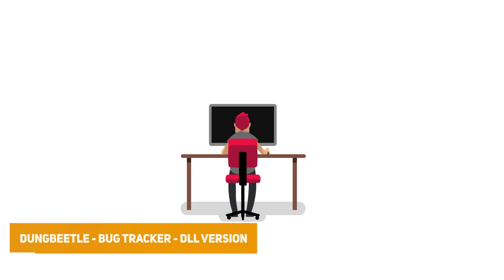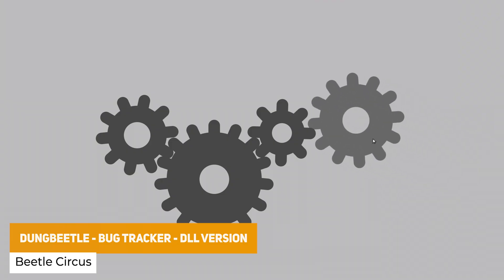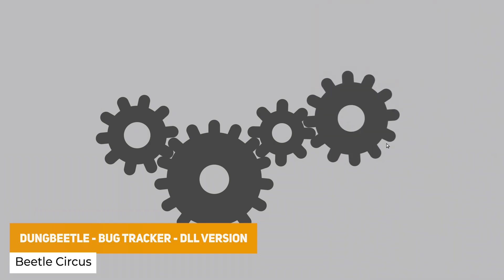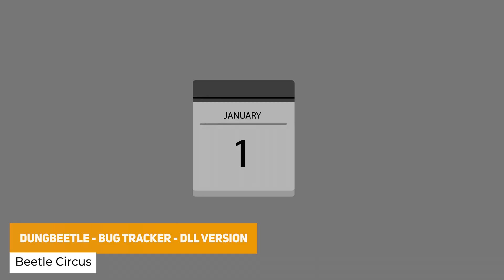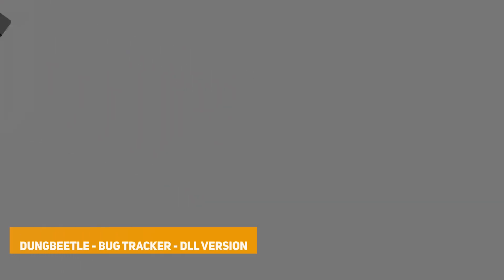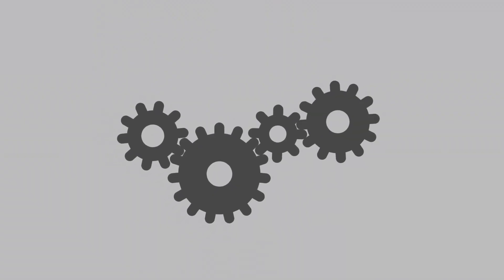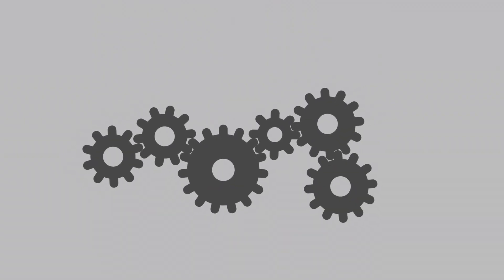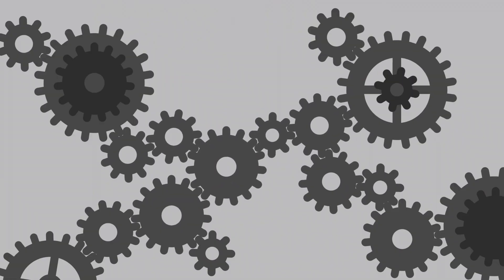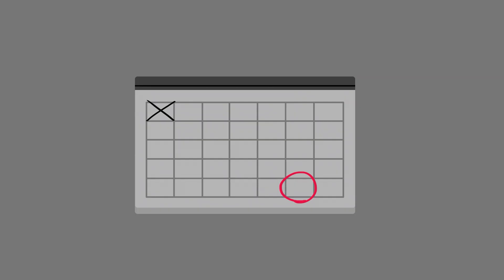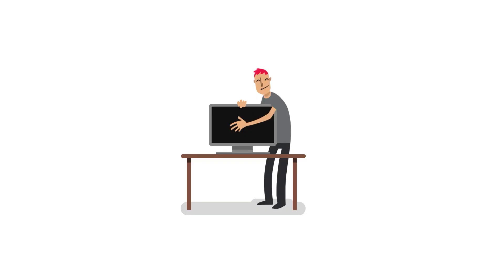The next one is Dung Beetle, which is a bug tracker. It allows you to collect and track feedback in your Unity projects — you can report from builds, report when issues arise in play mode, customize reports that are attached, encrypt transfers, or have a comfortable reporting and browsing experience in Unity.